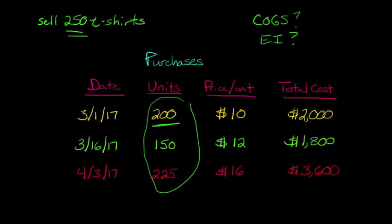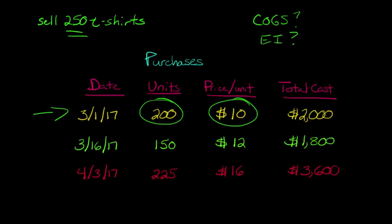You've purchased 200, then 150, and then 225 on three different dates. So you have to go ahead and say, well, I've sold now 250 shirts, but I've got a lot more that I've actually purchased than 250. So which 250 did I sell? Because I sold them, or I bought them, at different prices. The ones that I bought on March 1st, I bought 200 t-shirts for $10 each. And then on March 16th, I went and bought 150 shirts for $12.